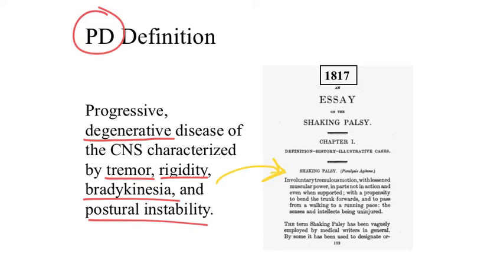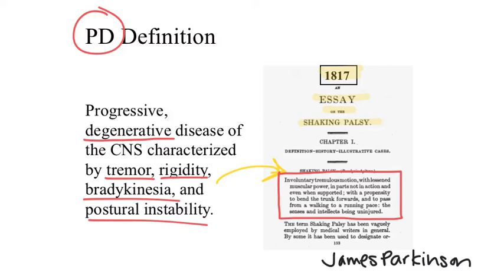In 1817, in a document titled An Essay on the Shaking Palsy, written by James Parkinson, the description mentioned involuntary tremulous motion, lessened muscular power, and with a propensity to bend the trunk forwards, all of which are characteristic of PD as we know it today. The disease itself would go on to be named after James Parkinson, hence the name Parkinson's disease.